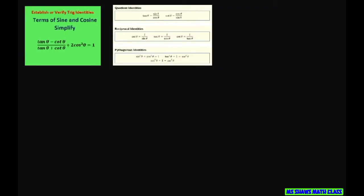Write our tan and cotan in terms of sine and cosine. So we're using our quotient identities. We have sine divided by cosine minus cosine divided by sine. Do the same thing for the denominator but with a plus sign.